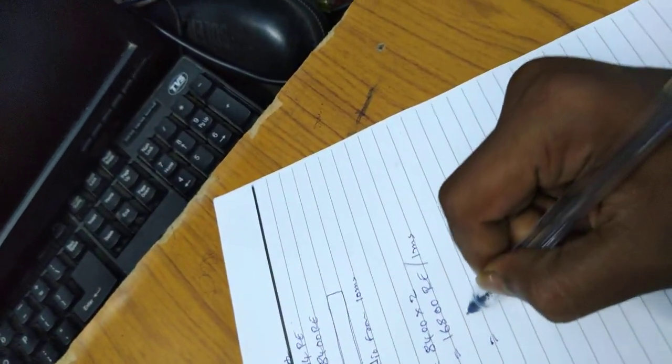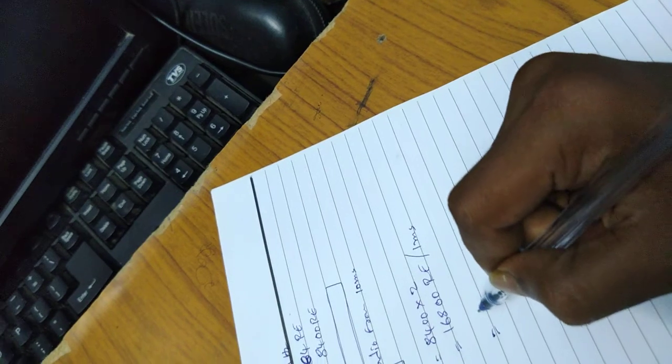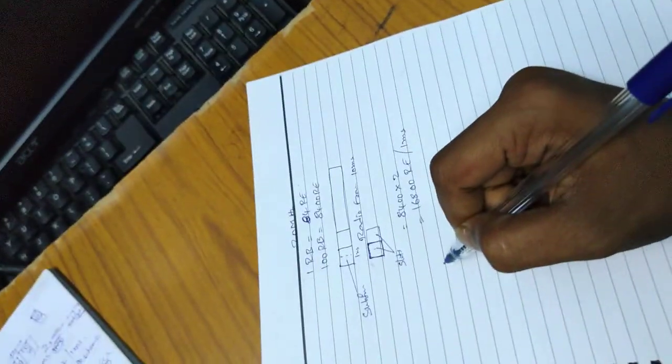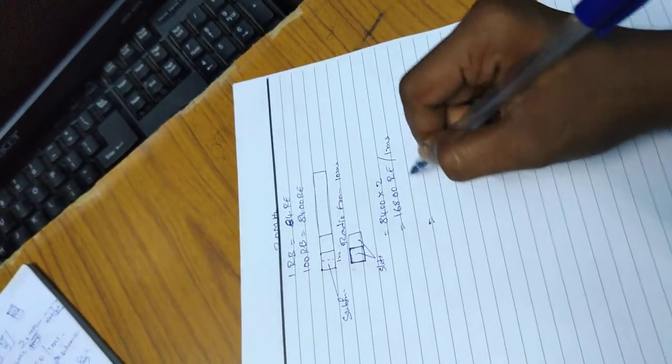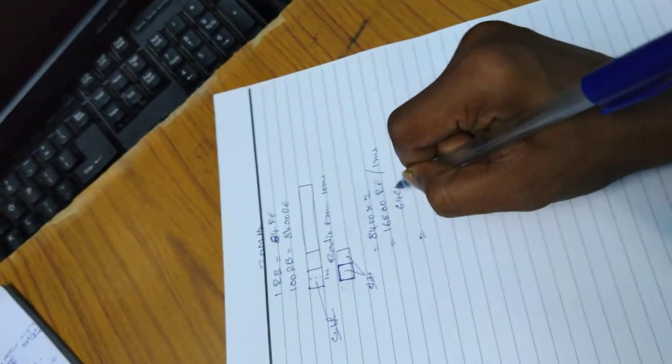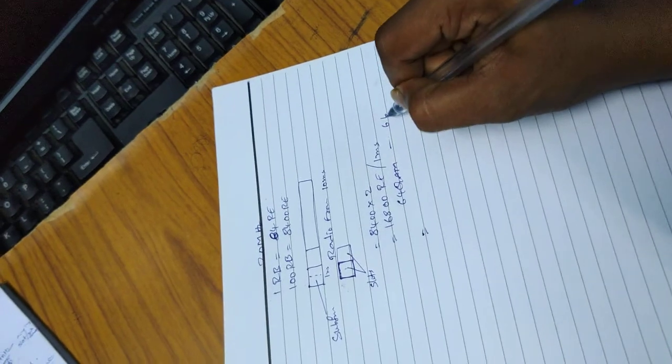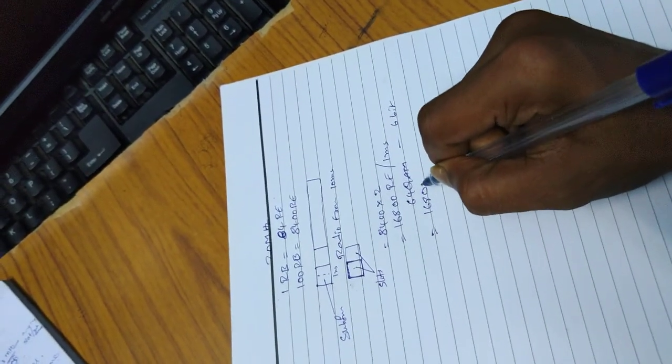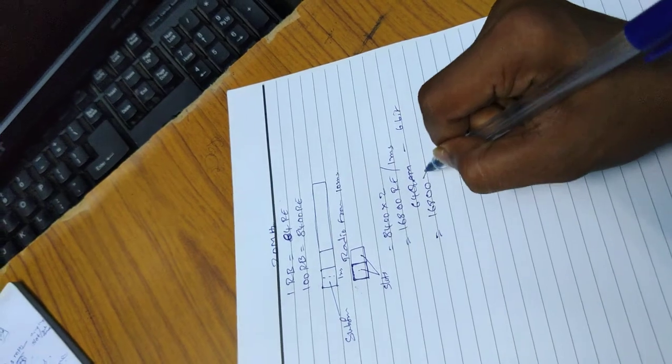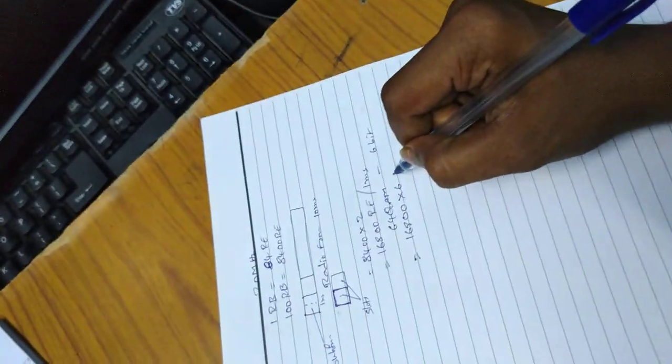Here we are using a modulation scheme. 64 QAM modulation is 6 bits per symbol. So 16,800 into 6 bits.